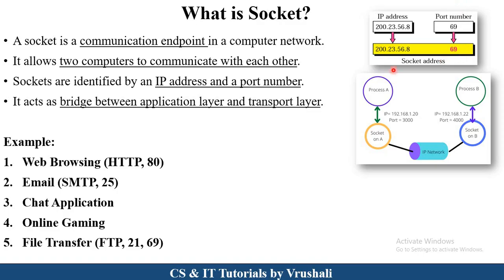For example, see here in this diagram, there is port number 69. Port number 69 is generally used to transfer files, and if a sender wants to transfer a particular file, the IP address and port number information are stored into the socket, which is also called a socket address. Basically, a socket is a bridge between the application layer and the transport layer of the OSI model.